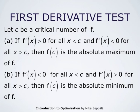If F' at X is positive for all X less than C, and F' at X is negative for all X greater than C, then we may deduce that F at C is the absolute maximum value of F. Likewise, if F' at X is negative for all X less than C and positive for all X greater than C, then F at C is the absolute minimum of F. We may use this test to verify that the solution we found is actually the correct solution.